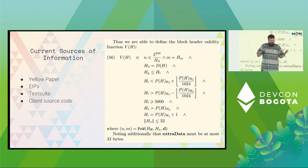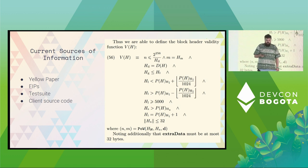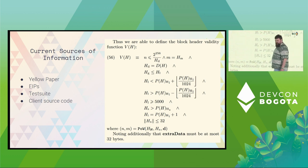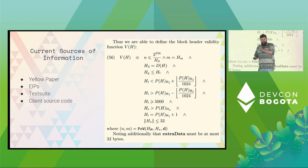So currently, if you're someone who wants to know about the state transition function and how the execution layer works, where would you go for information? Well, the first place you could go is the yellow paper. This is a lovely extract that explains what the header validity conditions are. Some people think this is readable — they are in the minority. The other problem with the yellow paper is that it's actually really out of date. This is the Berlin version, because no one's implemented London yet.